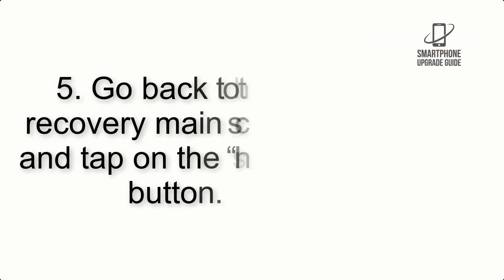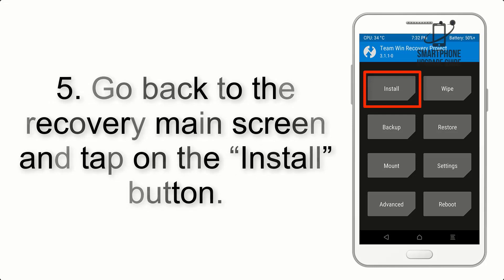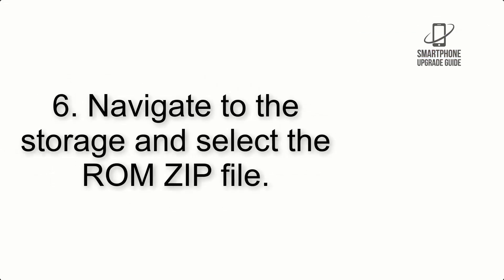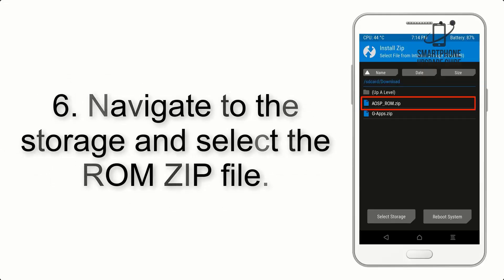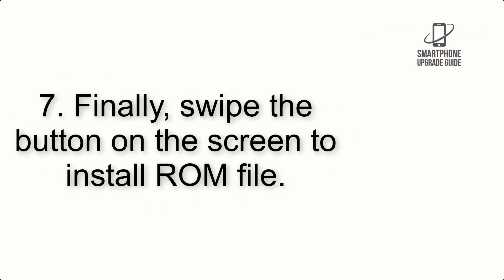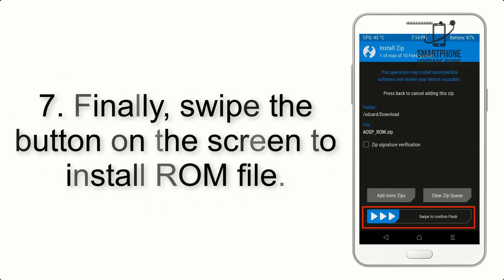Step 4: Swipe the button to wipe the device. Step 5: Go back to the recovery main screen and tap on the Install button. Step 6: Navigate to the storage and select the ROM zip file.